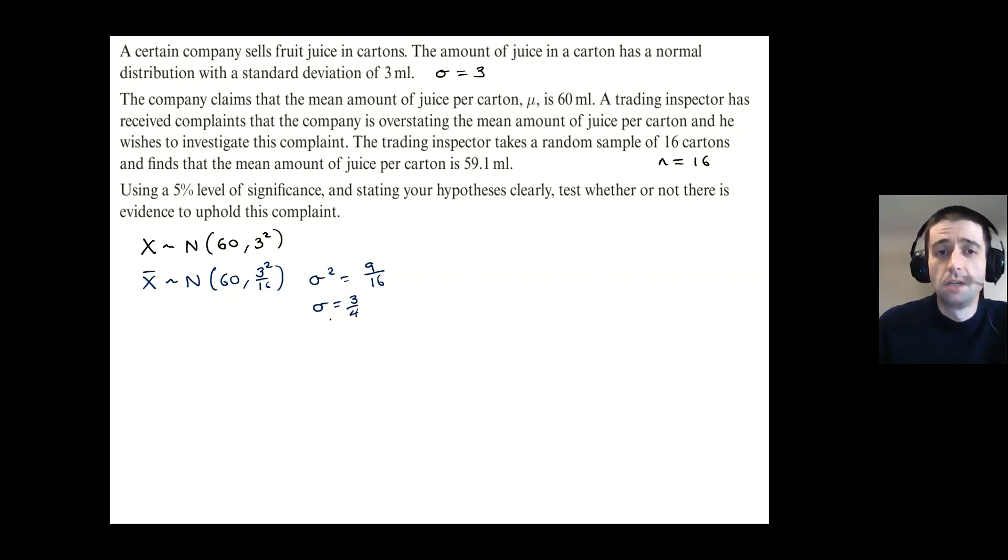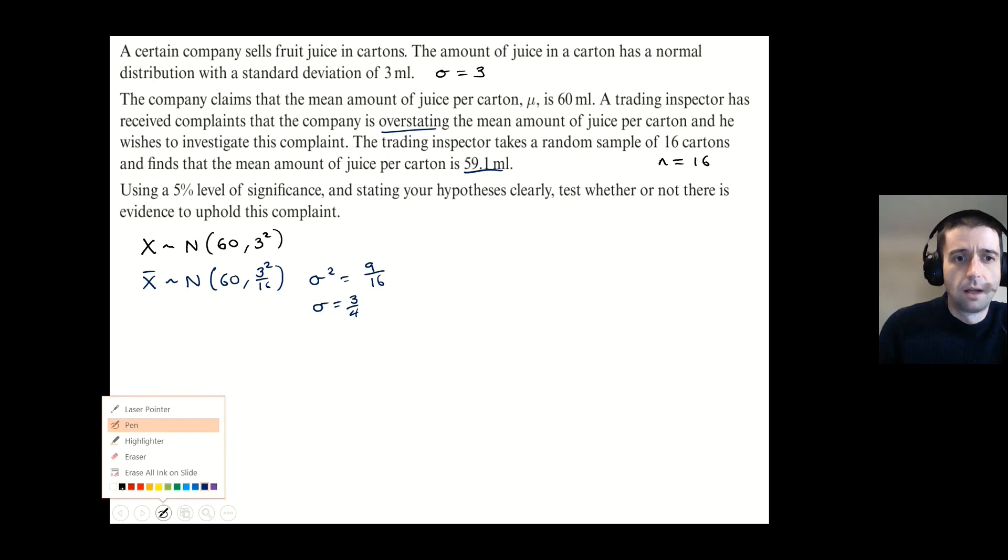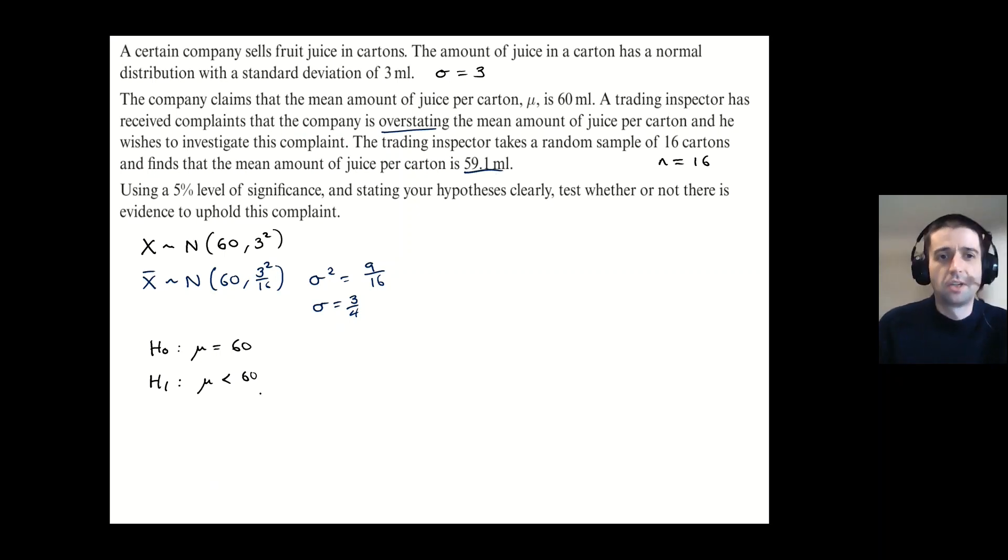And that's the standard deviation that I'm going to be using when I calculate a probability later on. Now we found that the mean amount of juice per carton is 59.1 and the suggestion is that the company is overstating the mean amount of juice. Now I'm going to use that to come up with a null hypothesis and an alternative hypothesis. Now, my null hypothesis here, because we're testing the mean of the normal distribution, is that μ is 60 as claimed by the company. So your starting assumption is that the claim is true and your alternative hypothesis H₁ in this case. Now, because it says that the company's been overstating, our alternative hypothesis is that μ is less than 60. And there's a bit of a giveaway in that we've been given 59.1 as a value to test that it's going to be less than 60.